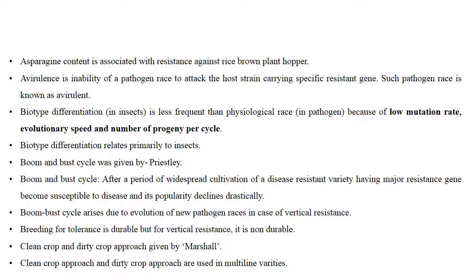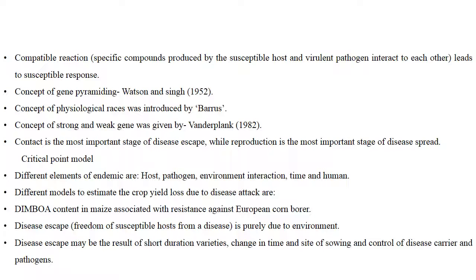Breeding for tolerance is durable but for vertical resistance it is not durable. Clean crop and dirty crop approaches were given by Marshall, and both are used in multiline varieties. Compatible reaction means specific compounds produced by a susceptible host and virulent pathogen interact with each other, leading to a susceptible response.